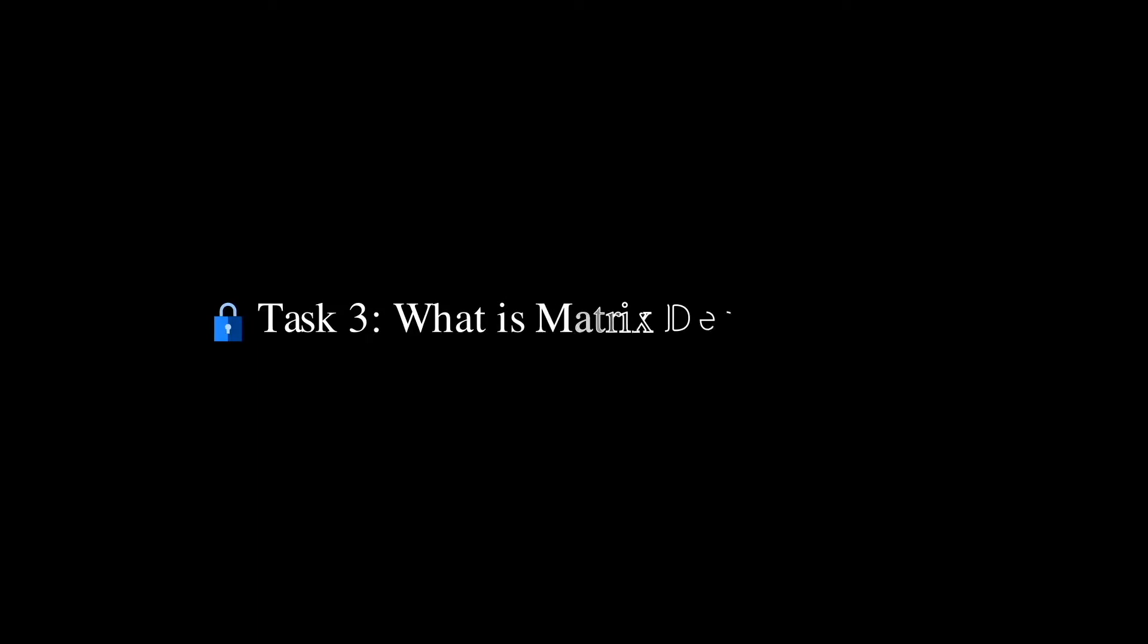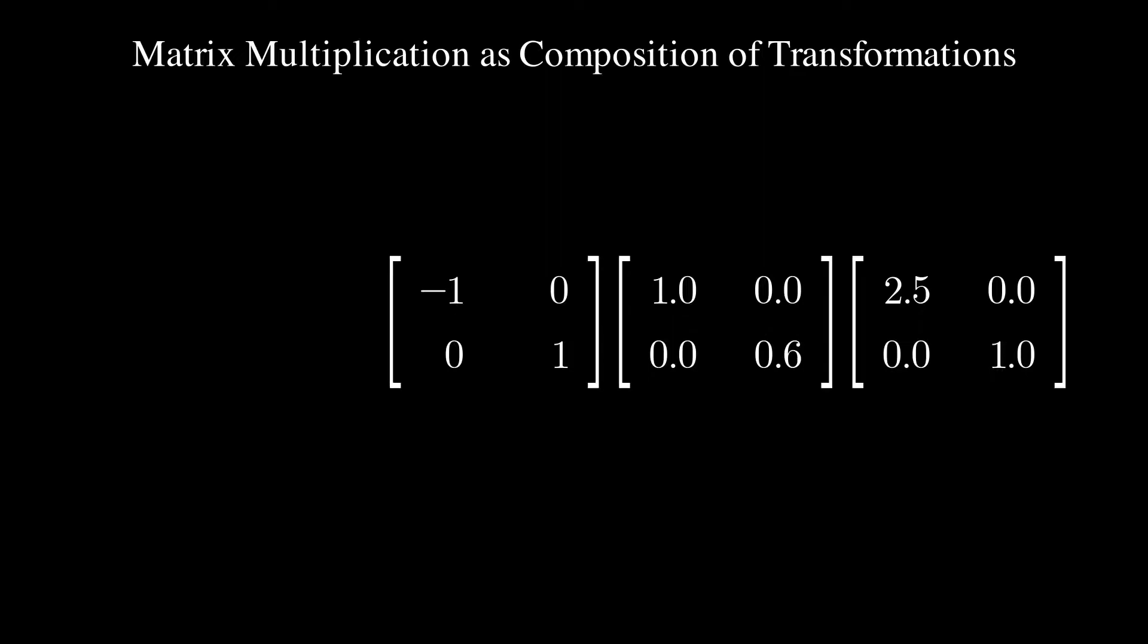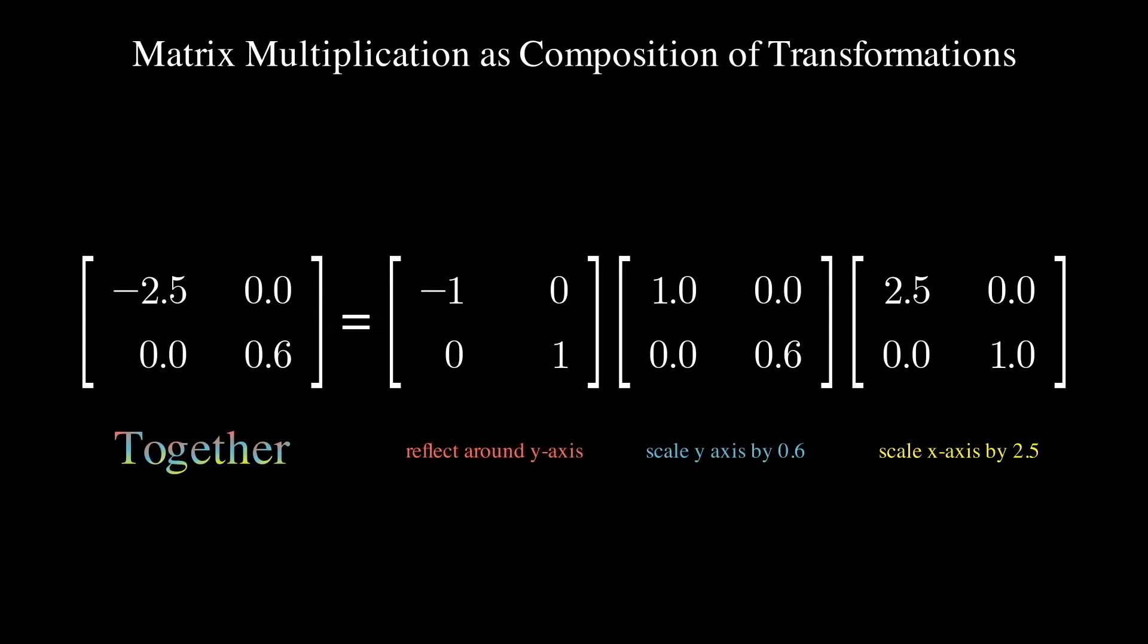What is matrix decomposition? But let's ensure we understand matrix composition first. Whenever we multiply matrices, we're essentially composing their distinct transformations together into one transformation. For example, I can multiply the three matrices on the right to get the one matrix on the left. And visually, it looks like this.